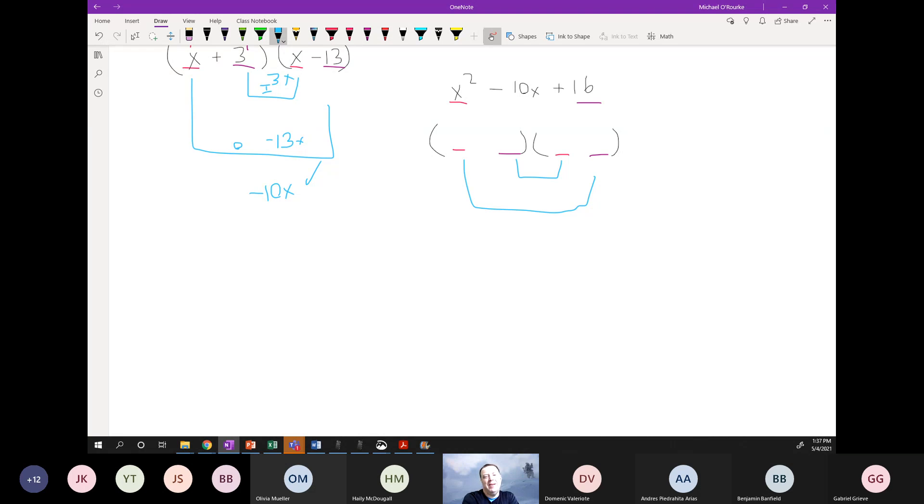I saw lots of people with fives earlier. Oh, Haley says negative two and negative eight. Do we agree with Ailey and Olivia? X minus two, x minus eight. So x times x is x squared. Good. Negative two times negative eight equals positive 16. Good. And if we double check here, negative 2x, negative 8x, negative 10x. Check, check, check.